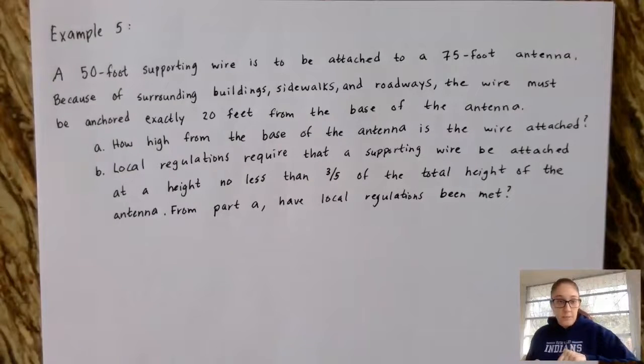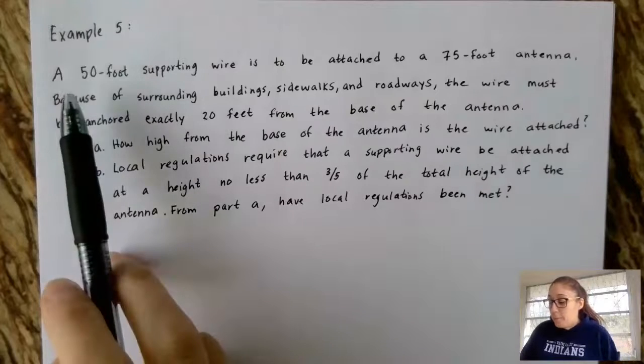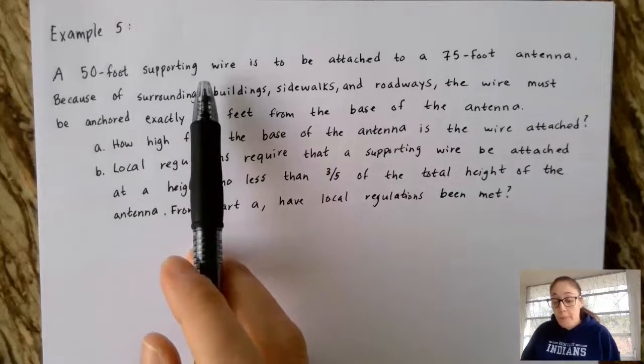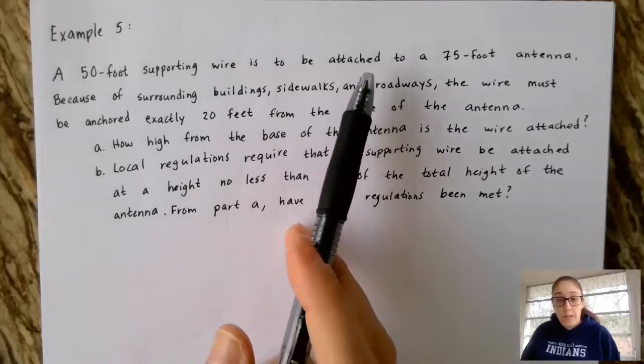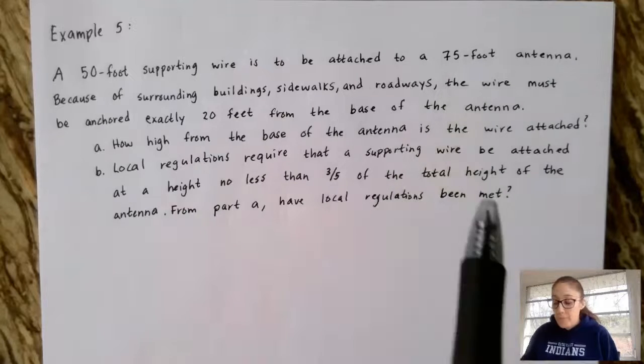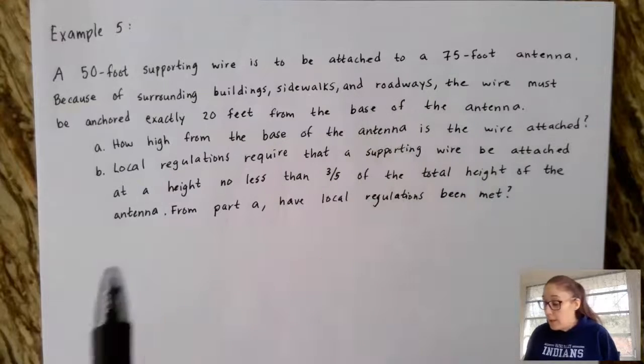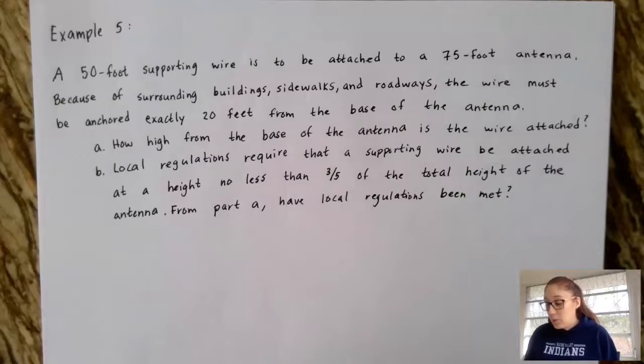Alright, so this is our last example for today. We have a word problem. A 50-foot supporting wire is to be attached to a 75-foot antenna. Because of surrounding buildings, sidewalks, and roadways, the wire must be anchored exactly 20 feet from the base of the antenna. So there are two parts to this question.